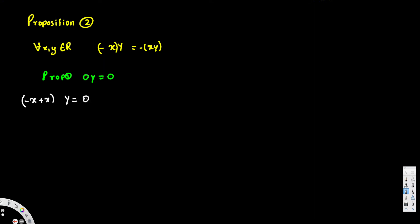Since negative x plus x equals zero, we can write (negative x plus x) times y is equal to zero. We play around with this expression and want to finally end up with our target result without assuming it — that's the purpose. The axiom we are using here is the additive inverse.